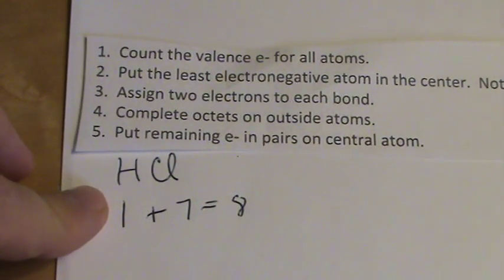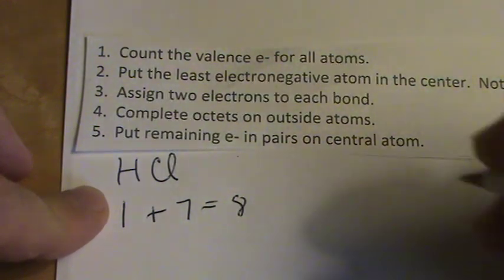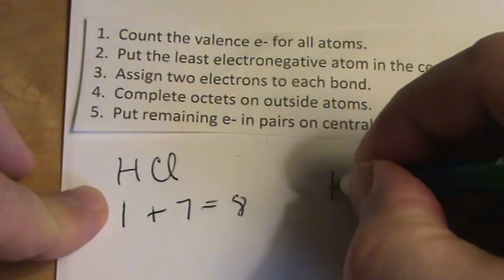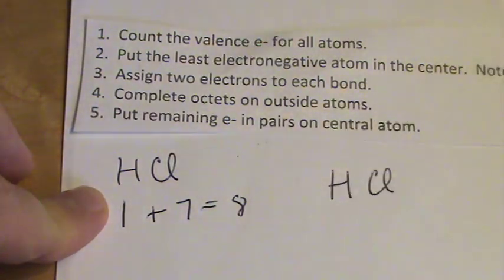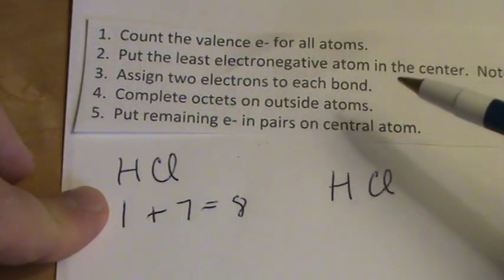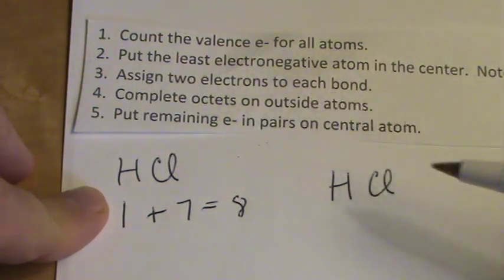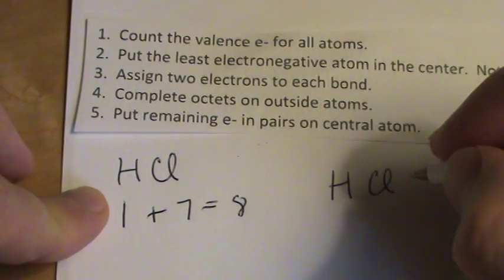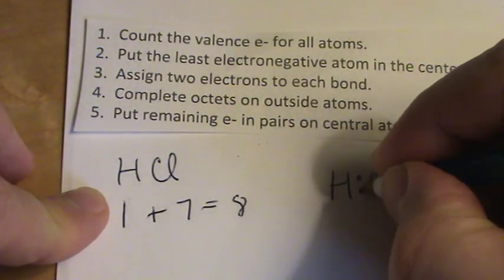Well, there's really no center to this, so it doesn't matter about putting the least electronegative at the center, so let's just write HCl. We're going to put two electrons between the atoms to form bonds, so now they're bonded together.